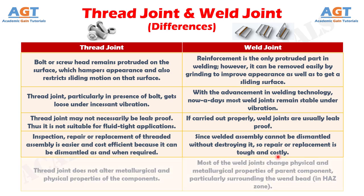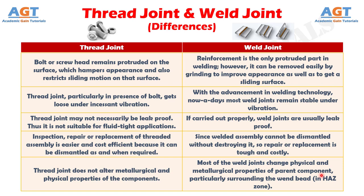Number 9: thread joint does not alter the metallurgical and physical properties of the components. Whereas, most weld joints change the physical and metallurgical properties of the parent component, particularly surrounding the weld bead in the heat affected zone.